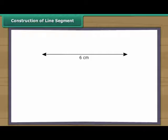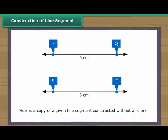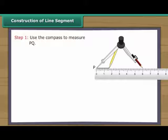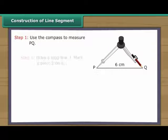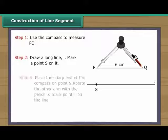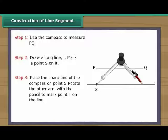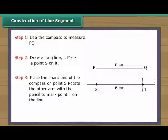Suppose a six centimetre long line segment PQ is given. We want to create another line segment ST of the same measurement. How do we do it without using a ruler? Use the compass to measure PQ. Draw a long line L and mark a point S on it. Place the sharp end of the compass on point S. Rotate the other arm to mark point T on the same line. We have a line segment ST which is a copy of the line segment PQ.